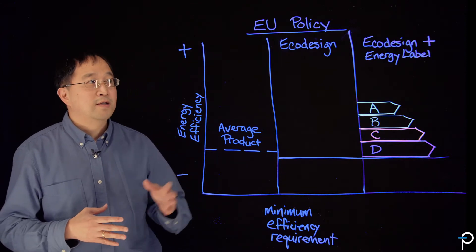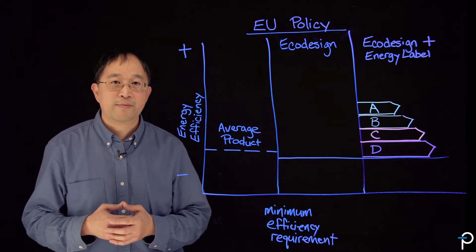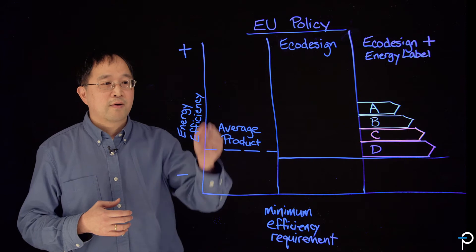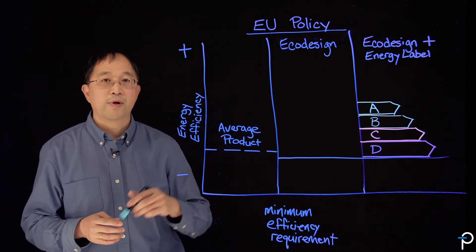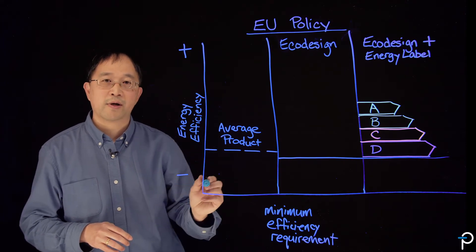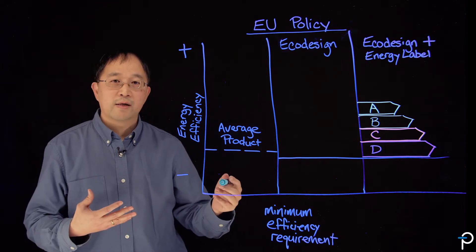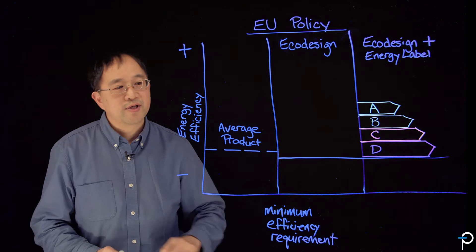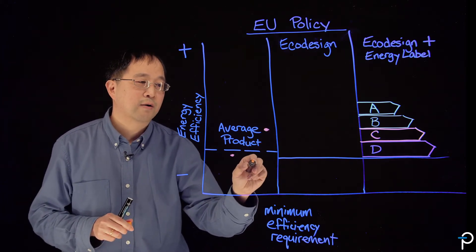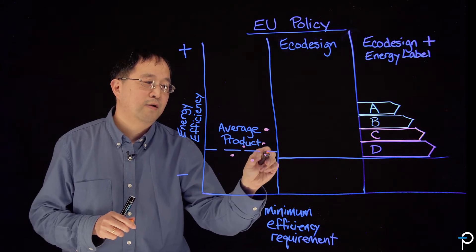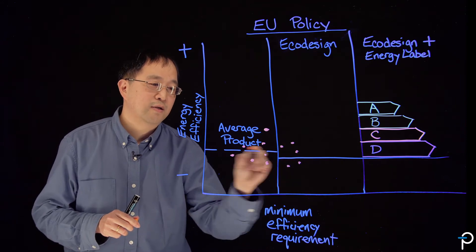One framework that I wanted to talk about today is the way policy is implemented in Europe. You can see here on this graphic that energy efficiency is marked on the vertical axis with higher energy efficiency toward the top and lower energy efficiency toward the bottom. In a landscape of different products, you will have, for example, some products with really high energy efficiency, maybe some down here that are not so great. And what I've noted here for an average product is this dashed line.